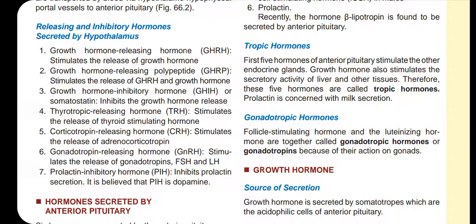Thyrotropic releasing hormone helps stimulate thyroid stimulating hormone. Corticotropin releasing hormone helps reduce adrenocorticotropin hormone. Gonadotropin releasing hormone stimulates follicle stimulating hormone and luteinizing hormone. And finally, prolactin inhibiting hormone inhibits prolactin secretion.